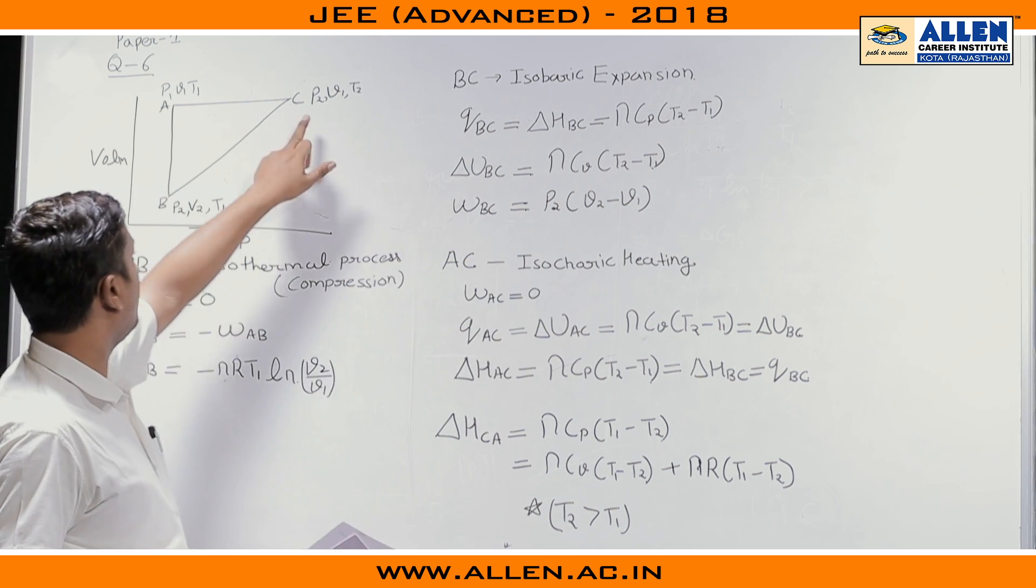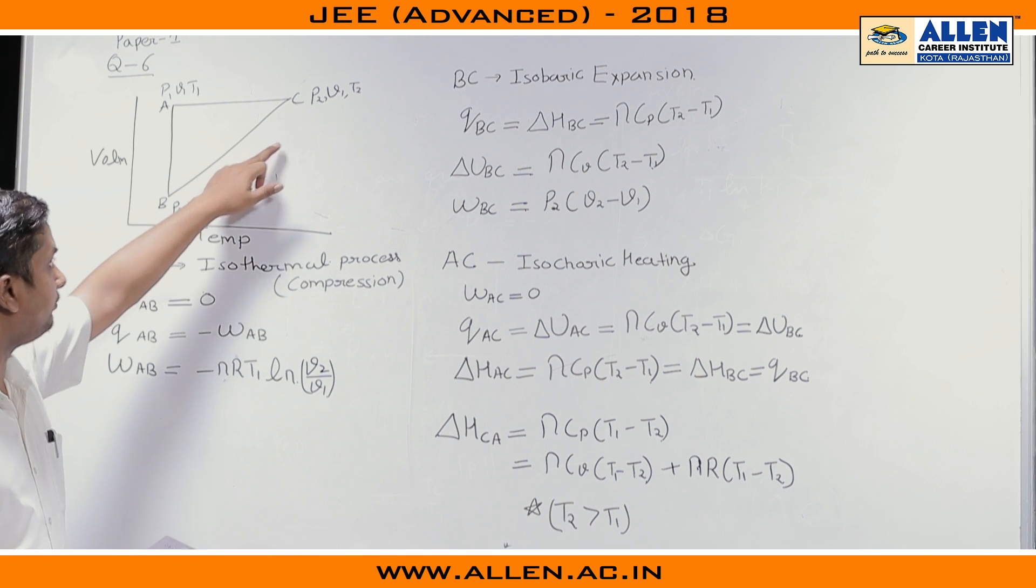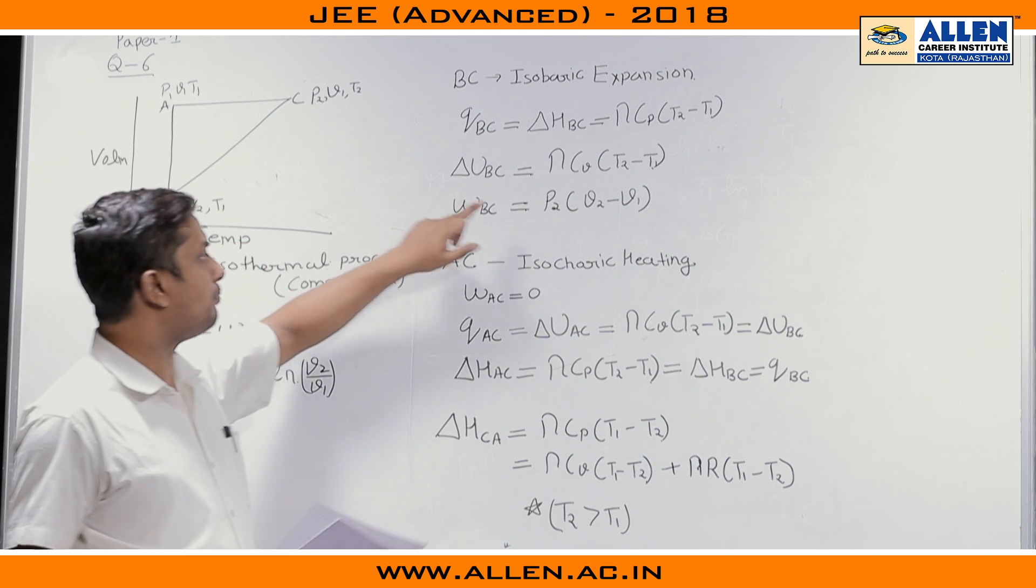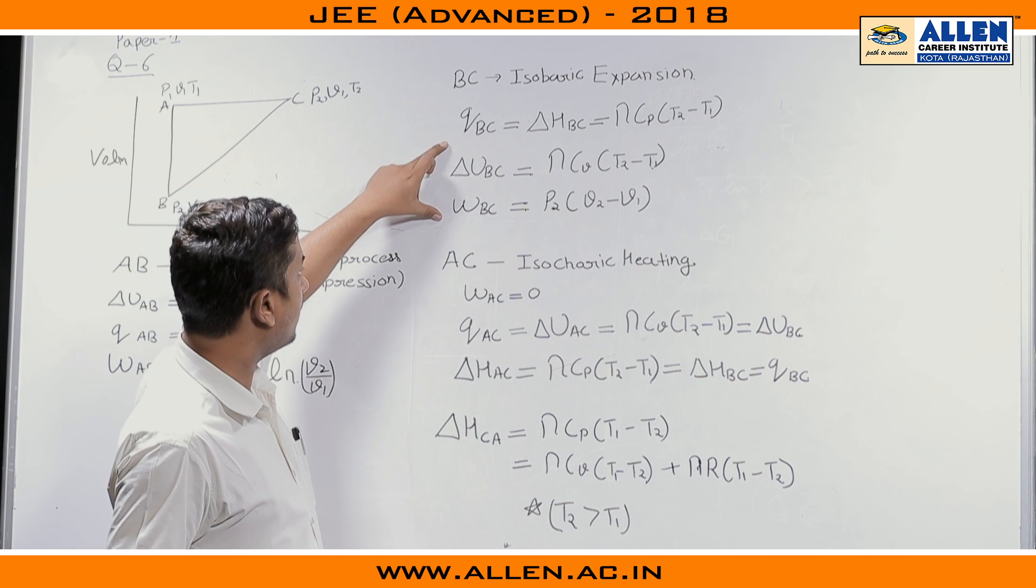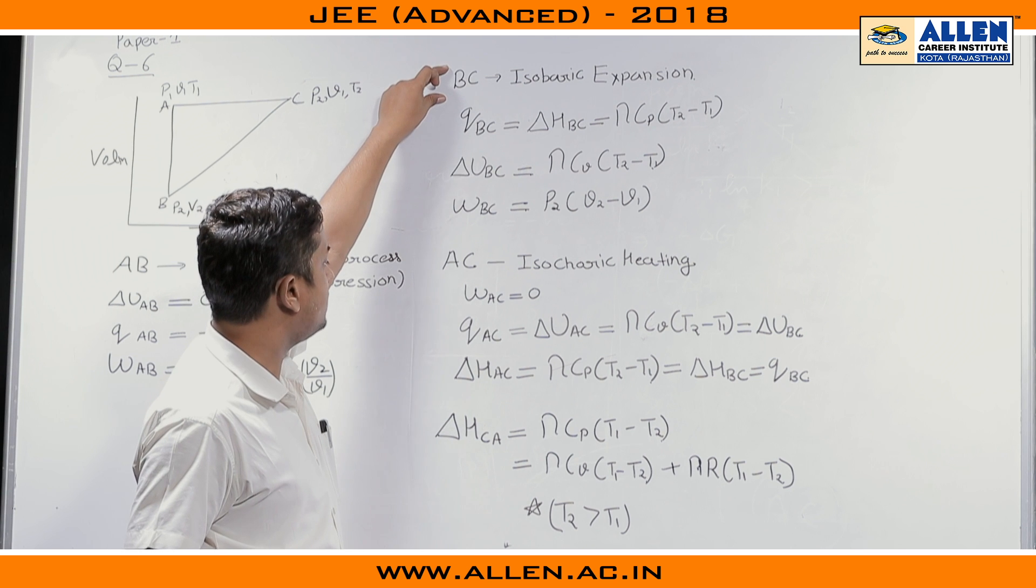The enthalpy change will be nC_P(T₂ minus T₁) and the change in internal energy will be nC_V(T₂ minus T₁). Now, the work done can be calculated as the pressure is constant. Work done will be simply P₂ into (V₂ minus V₁).